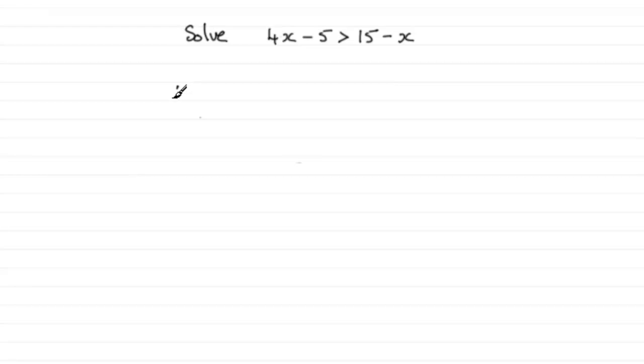And to do something like this, all you need to do is add x to both sides, so we're going to get 4x minus 5 plus x is greater than just the 15. So 4x plus x is therefore going to give us 5x, and we've got that minus 5 is greater than 15.